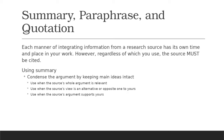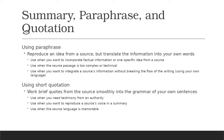With paraphrase, you're reproducing an idea from a source but translating the information into your own words. Use this when you're working with something decidedly less than an entire article — individual facts or one specific idea from a source. Use it when the source passage is too complex or technical and you need to boil it down for your reader, or when you want to integrate the source's information without breaking the flow of your writing.